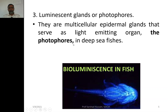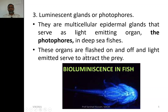Photophores are present in deep sea animals. When light is flashed on and off, it serves two purposes. First, when the light is on, prey are attracted towards it; when turned off, the prey cannot detect the predator and is captured. On the other hand, if the animal wants to escape a predator, it produces an abrupt flash of light, causing the predator to blink and close its eyes temporarily, giving the prey time to escape.